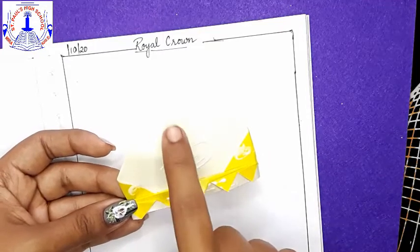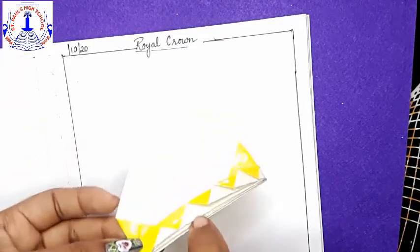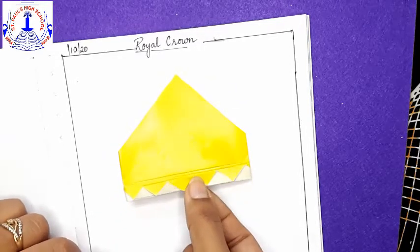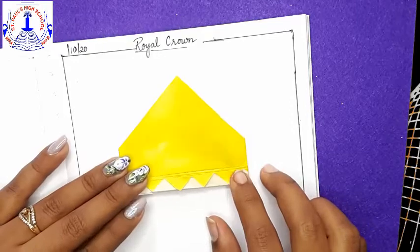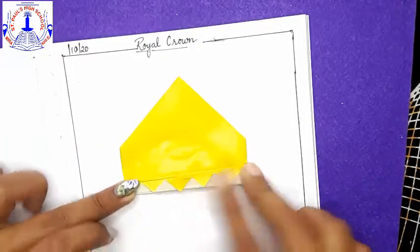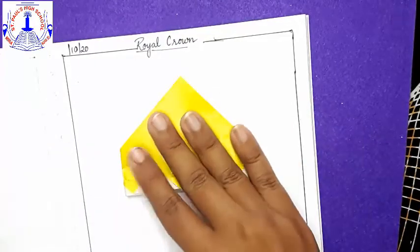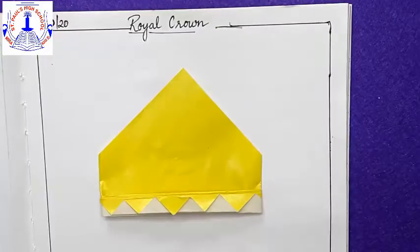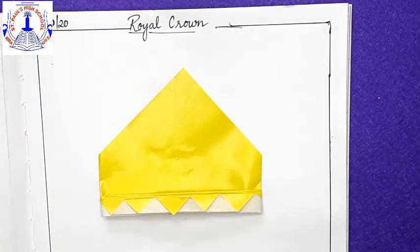Okay? After it sticks, apply some glue here. If you want, apply some glue here also. So this is the back side. And this is the front side. Colored side will be your front side. Just paste it this way. Paste it. Paste it. Okay?